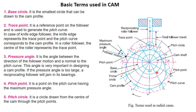The pitch circle is the circle drawn with a radius equal to the distance between the center of the cam and the pitch point. The circle drawn with this radius is called the pitch circle.